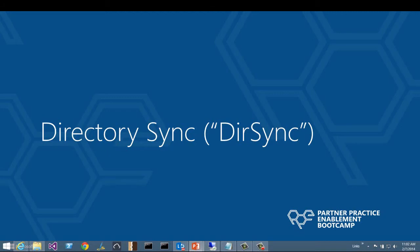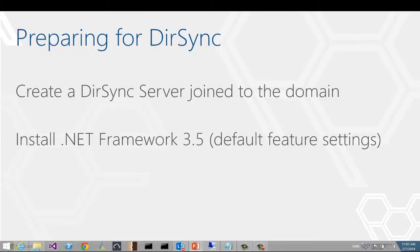Now that you understand the supported scenarios for integrating your on-premise directory with Windows Azure AD, let's take a look at what's needed to actually achieve directory synchronization. The first thing you're going to want to do is set up a server in your domain to be the dir sync server. It's technically not necessary, but it is recommended so you're not installing the directory sync tool on your AD server. This tool also requires .NET Framework 3.5. So, for example, if you're using Server 2012 as your image, you will need to add this feature in the Windows features.